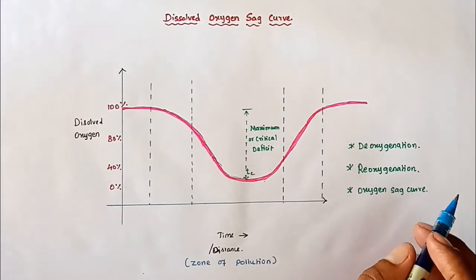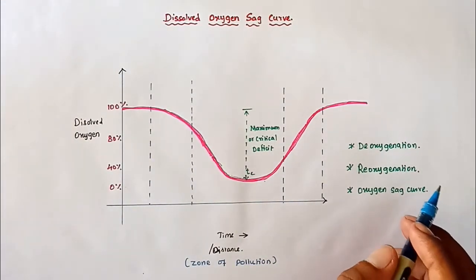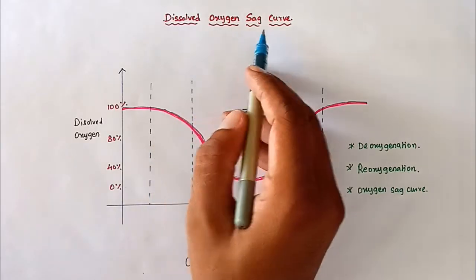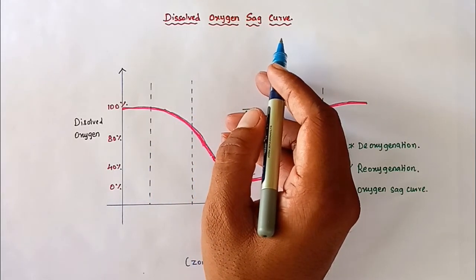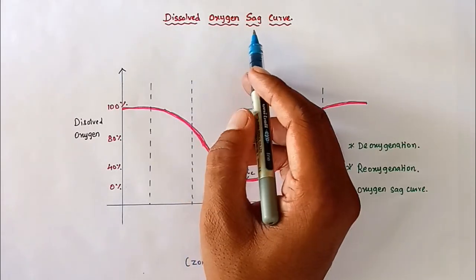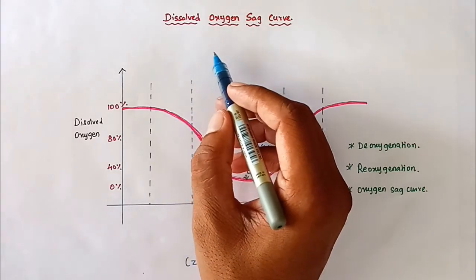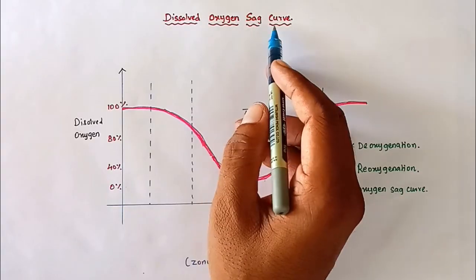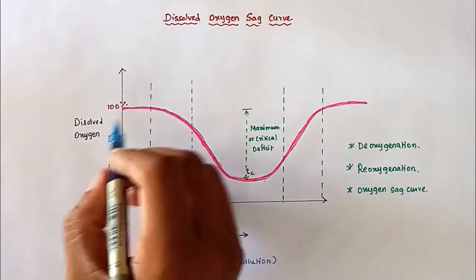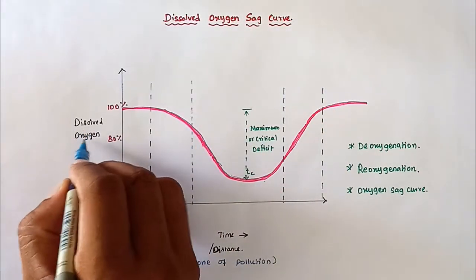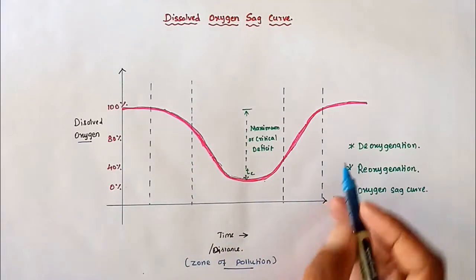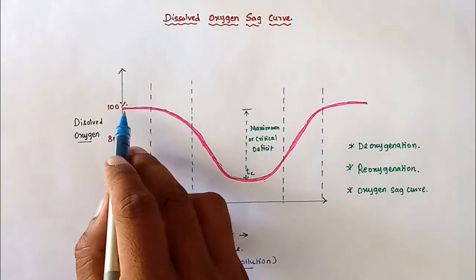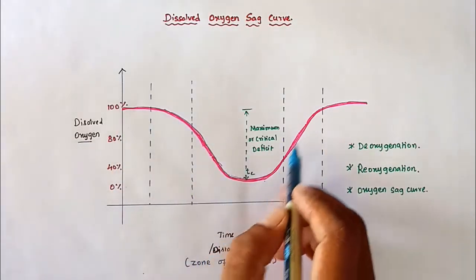Hello friends, welcome to civil engineering exam. Today we are going to see the dissolved oxygen sag curve, which is very important in the self-purification of rivers. We can take dissolved oxygen in the Y direction and the zone of pollution, time, or distance in the X-axis, so from that we can find out the dissolved oxygen in the different zones.